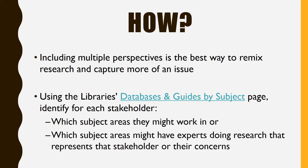Now let's layer in something that wasn't in the Hayden McNeil module: thinking about which subject areas each stakeholder group works in, or which subject areas have researchers who might represent that stakeholder group's concerns. Including the perspective of multiple stakeholders is the best way to remix other people's ideas. This will also eventually help us to find research by experts for experts, which might appeal to certain audiences or lend credibility to our work.